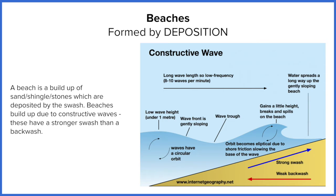A constructive wave not only has a strong swash but also fewer waves overall — we say they have a low frequency or a long wavelength, because there's a long distance between the peak of one wave and the peak of the next. They're not very tall, so the wave height is generally under a meter, and these are the waves you'd usually associate with a calm sea.